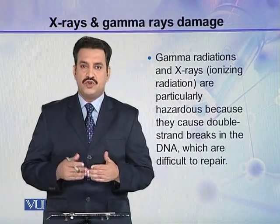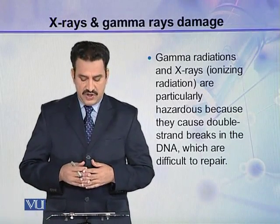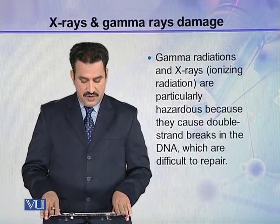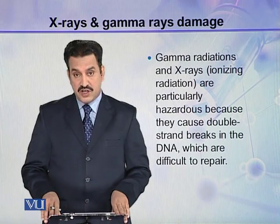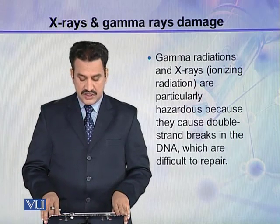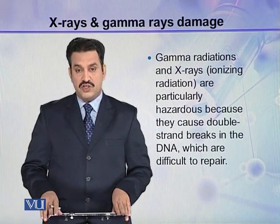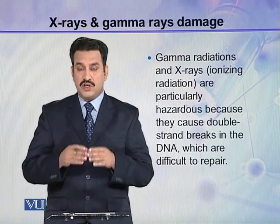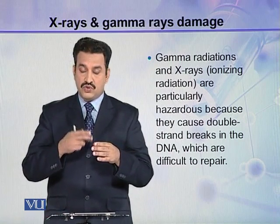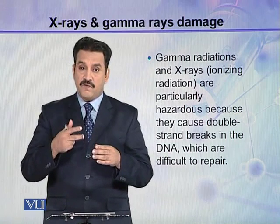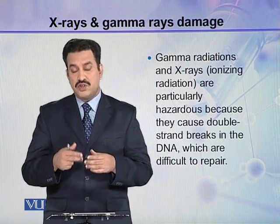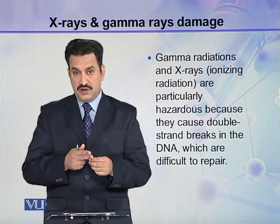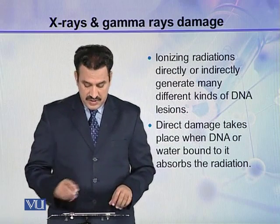Besides UV light, gamma radiations and X-rays, which are ionizing radiations, are particularly hazardous to the DNA because they cause double strand breaks in the DNA which are difficult to repair. In a DNA strand, two strands are helically coiled and if one strand is broken, it is very easy to repair. But if both strands are broken, it becomes difficult to repair.